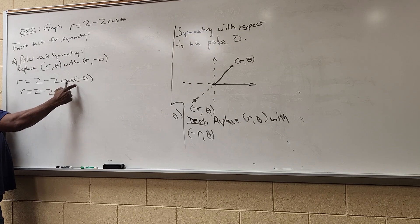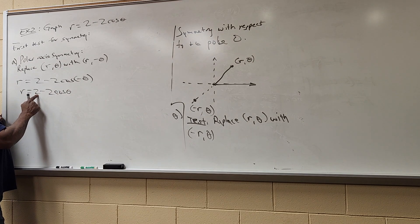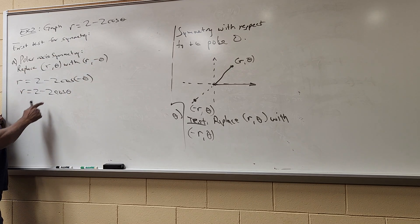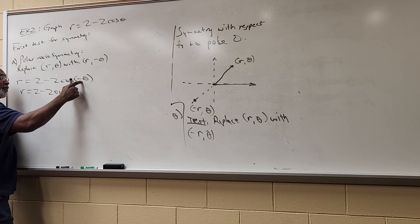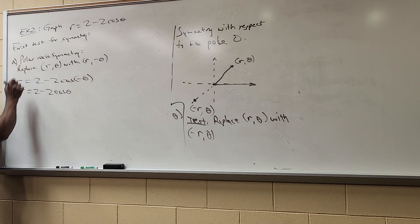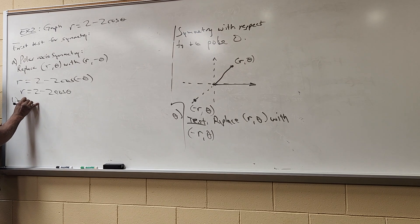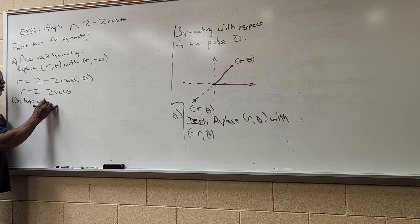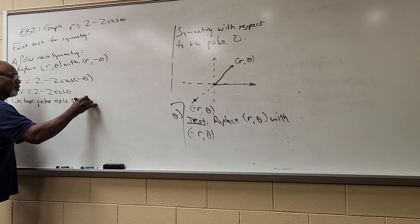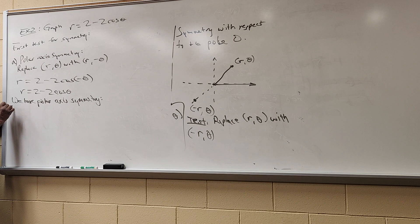From the identity sheet, cos(-θ) equals cos(θ). So when I take cos(-θ), that's equivalent to cos θ. Therefore r = 2 - 2cos θ — that's exactly what I started with. Since replacing θ with -θ gives the exact same equation back, we have polar axis symmetry.